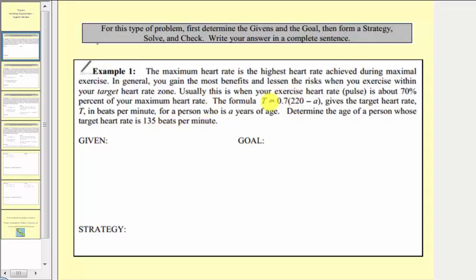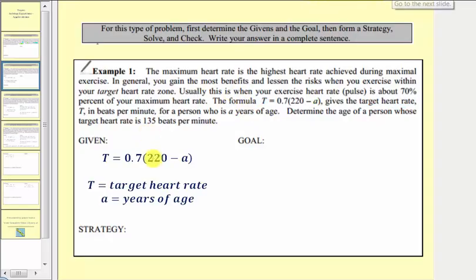Looking at our equation again, notice how T is the target heart rate and A is the person's age. This is actually the given information. The given information is our equation, where T equals the target heart rate and A equals the person's age. So here's the given information.